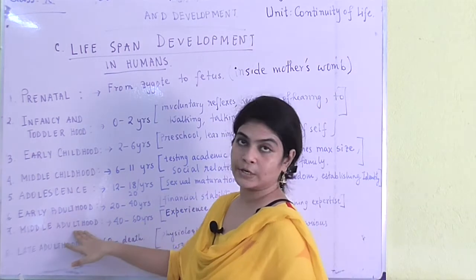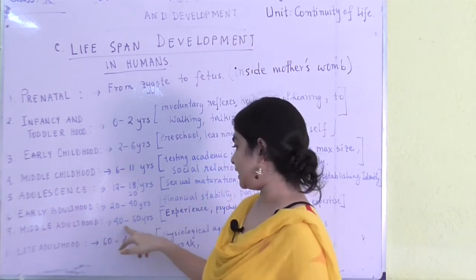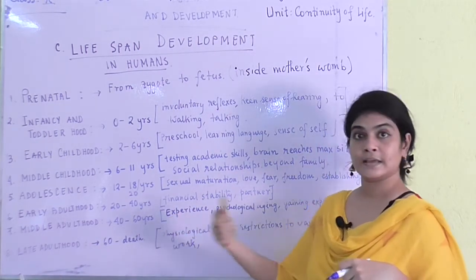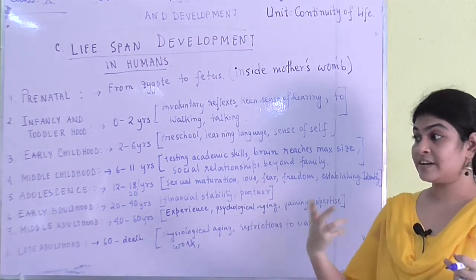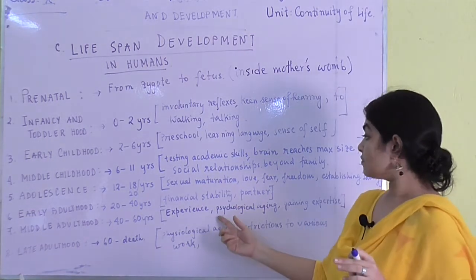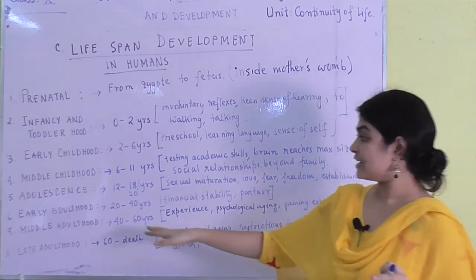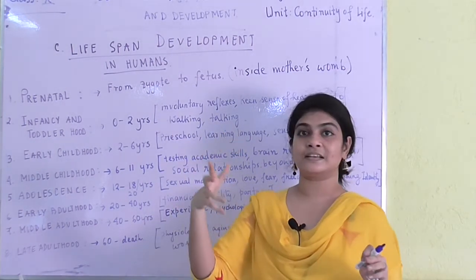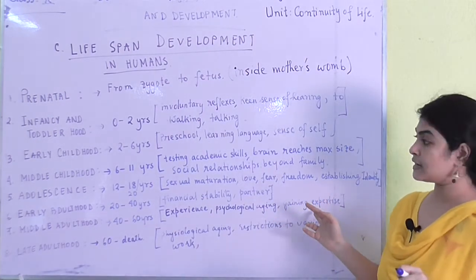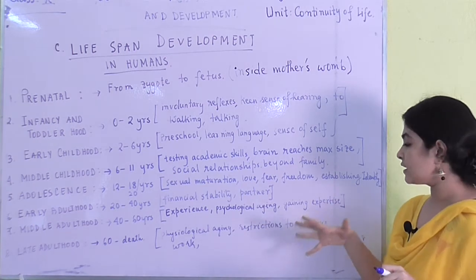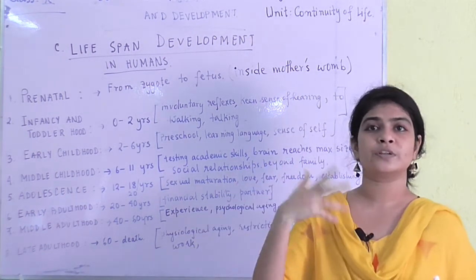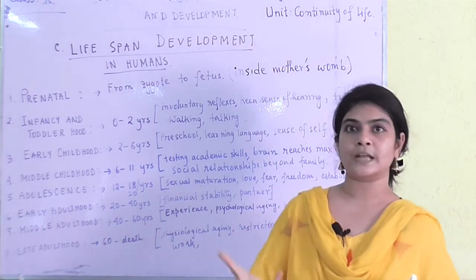Middle adulthood covers forty to sixty years. This phase includes gaining different career experiences and expertise. Psychological aging also begins — people start thinking they have grown old. One gains expertise in whichever work or job they are doing.